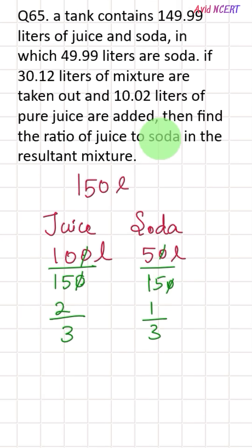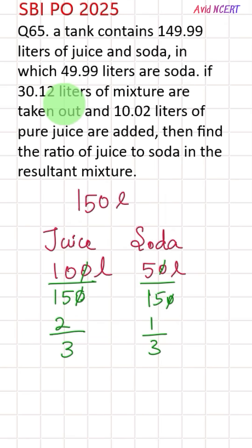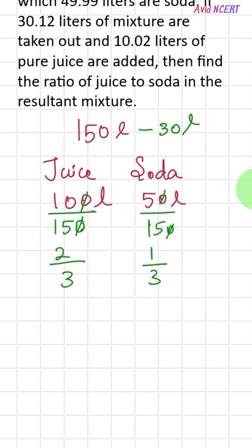Now the next sentence: if 30.12 liters of mixture is taken out, 30.12 can be rounded as 30. So out of this 150 liters, 30 liters is taken out, which means there's going to be a remaining of 120 liters.